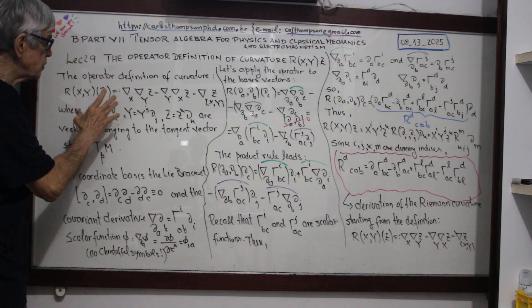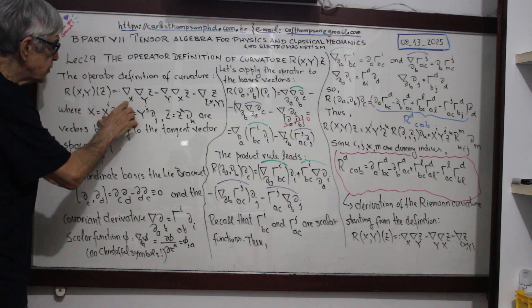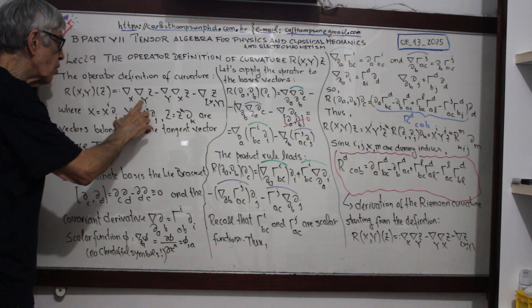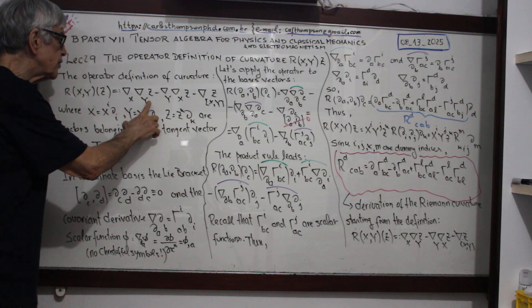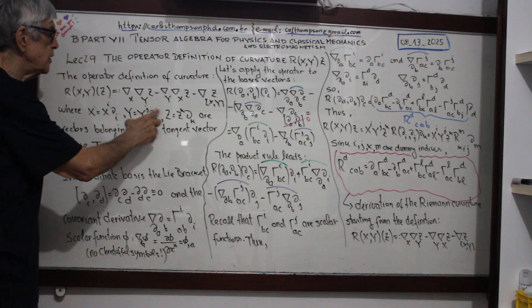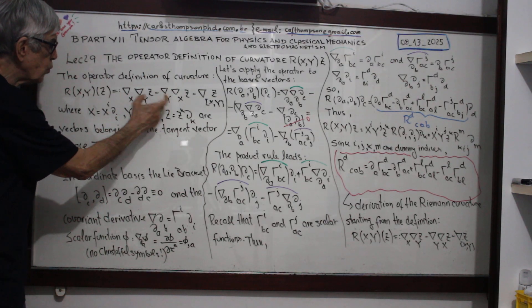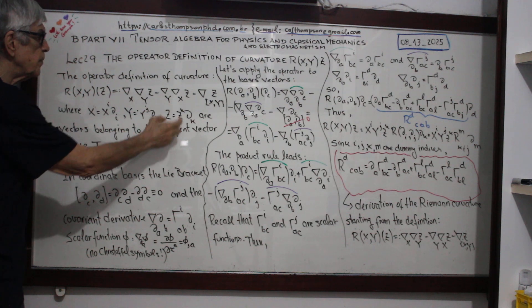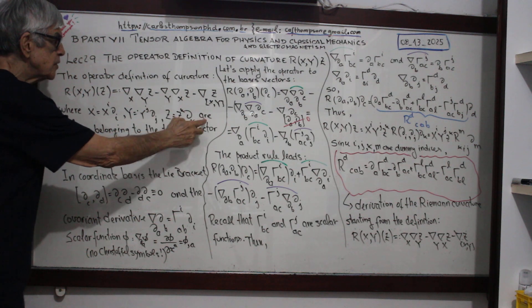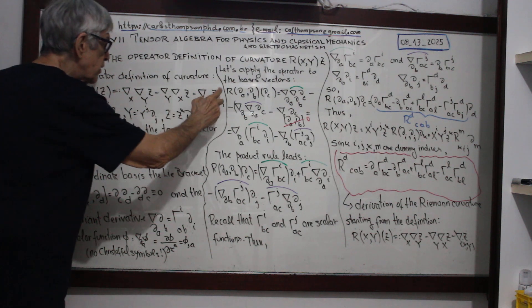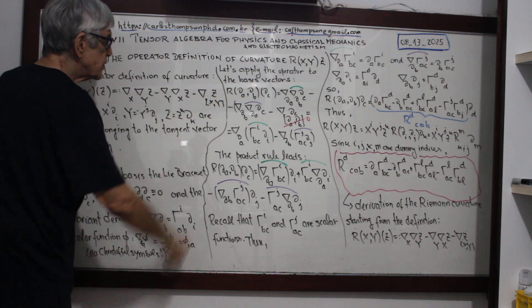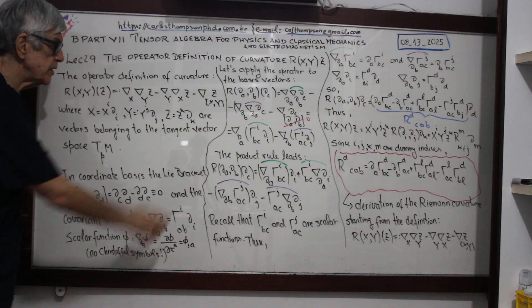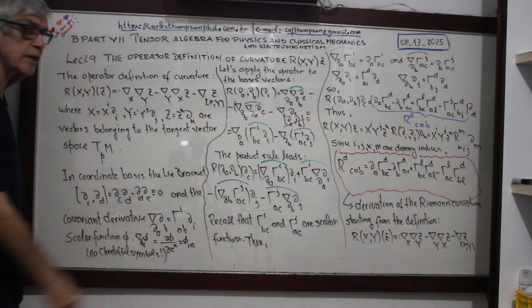By definition, this is a covariant derivative of z, then I swap x and y over here, minus covariant derivative of z — now this is x, y — you see the bracket.